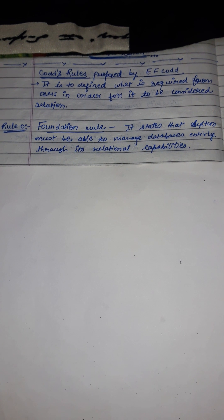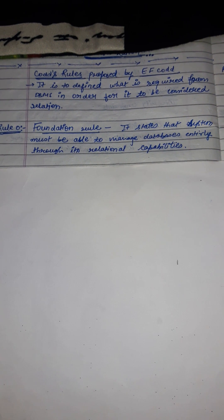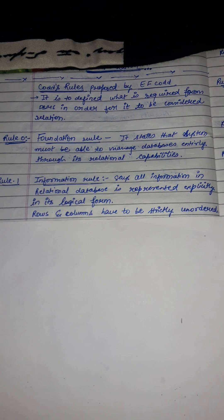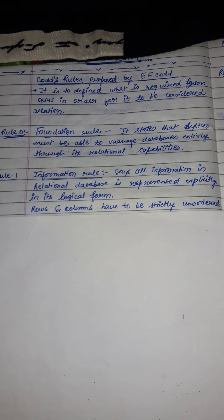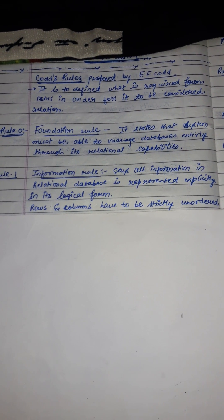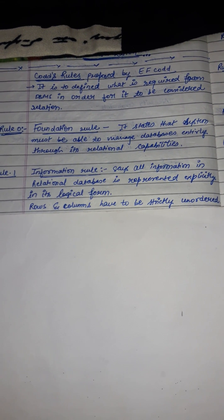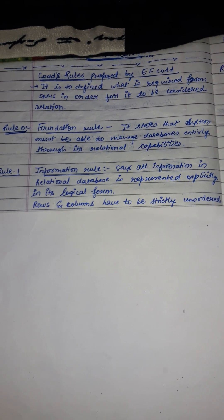If the system is relational or if the capabilities are more powerful, the system must be able to manage databases entirely through its relational capabilities. Rule 1 is the information rule. This rule simply requires that all data should be presented in table form. Rows and columns have to be strictly unordered. All the information in a relational database is represented explicitly in its logical form — rows and columns form.